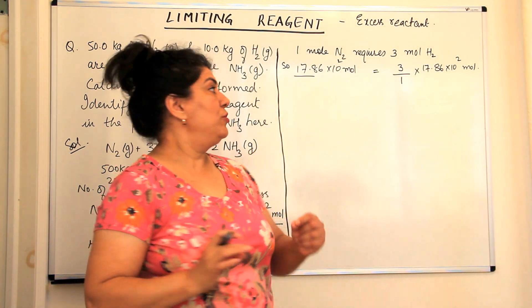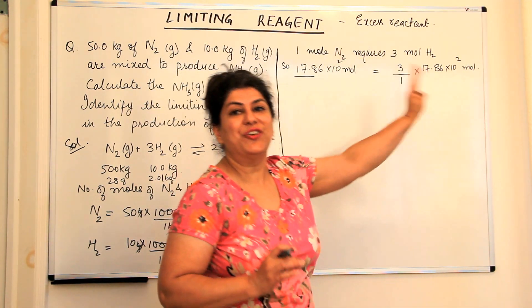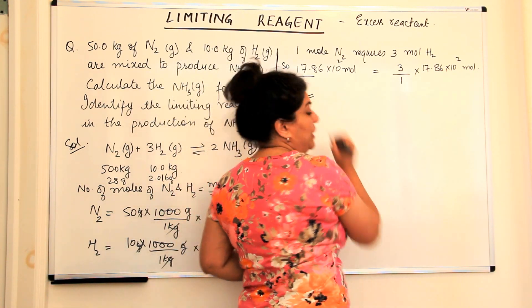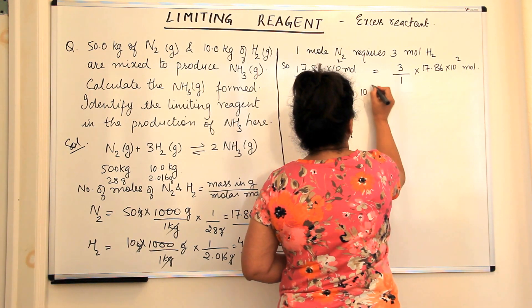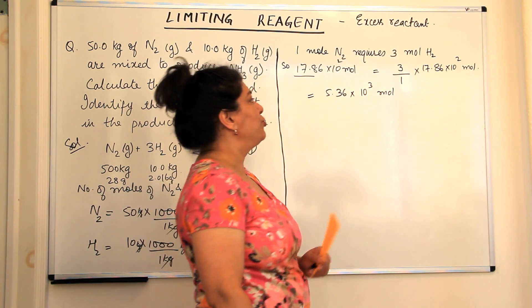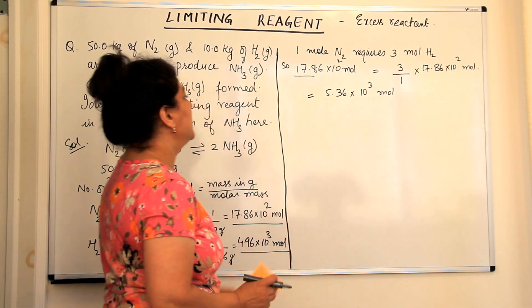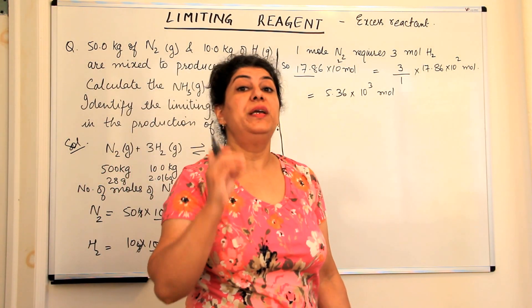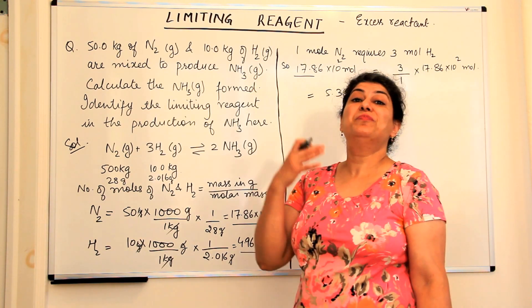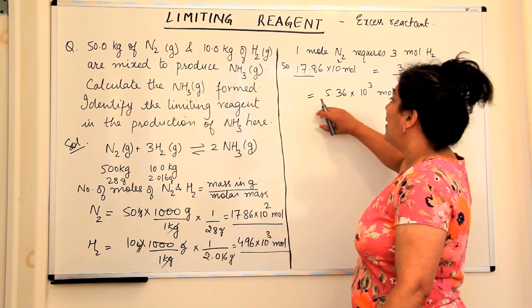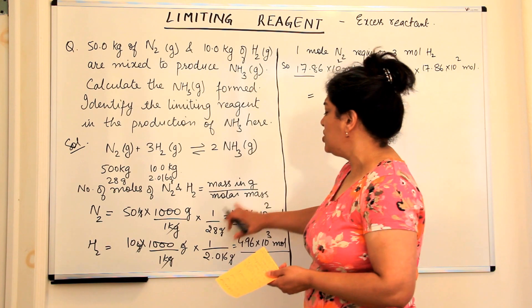For every 1 mole of nitrogen, 3 moles of hydrogen are required. So for 17.86 × 10² moles of nitrogen, the hydrogen required would be (3/1) × 17.86 × 10² = 5.36 × 10³ moles. (53.6 × 10² converted to the same exponent gives 5.36 × 10³.) But the amount of hydrogen we have been given is only 4.96 × 10³ moles, while we require 5.36 × 10³ moles to use all the nitrogen.